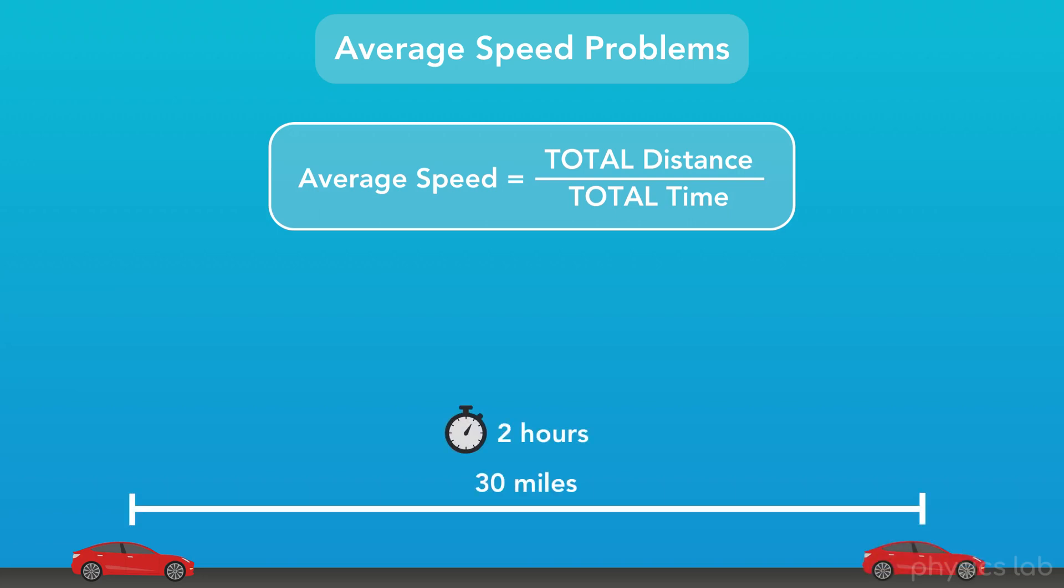For example, if we said that this car traveled 30 miles and it took 2 hours, then the average speed of the car for that period is 30 miles divided by 2 hours or 15 miles per hour. Seems pretty straightforward, right?